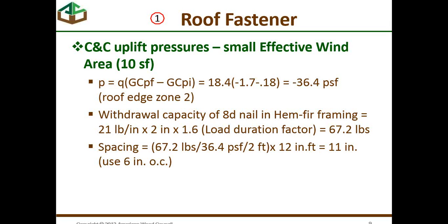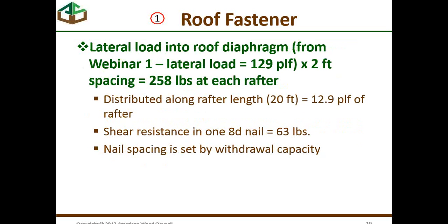With hem-fir framing and looking at the withdrawal capacity of an 8-penny nail, the calculation works out that we need these nails spaced 11 inches on center. Since it's down to 11 inches, I would use a 6-inch spacing on center in roof zone 2 for small effective wind areas. For the lateral load into the diaphragm — using 129 pounds per foot from webinar one, with rafters 2 feet on center — we have plenty of shear resistance in the nail. So the nail spacing is going to be set by withdrawal capacity, not shear in the diaphragm.